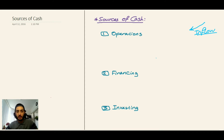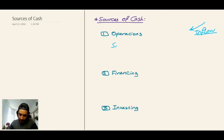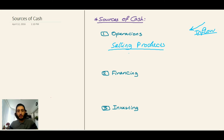First we have the operations source, the financing source, and the investing source. The operations source means the operation of the company — so if you are talking about inflow, it will be selling products, like milk or widgets — anything that will generate inflow of cash will be an operating activity. This is the first source of cash.